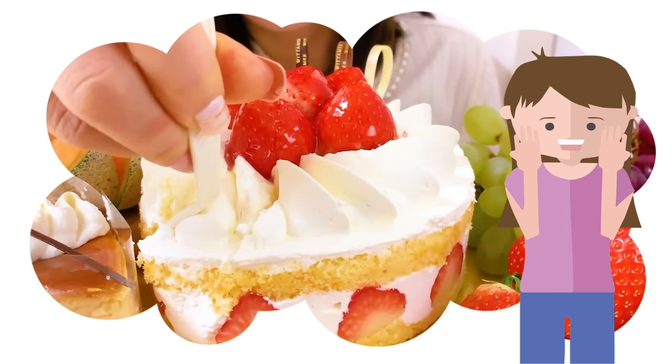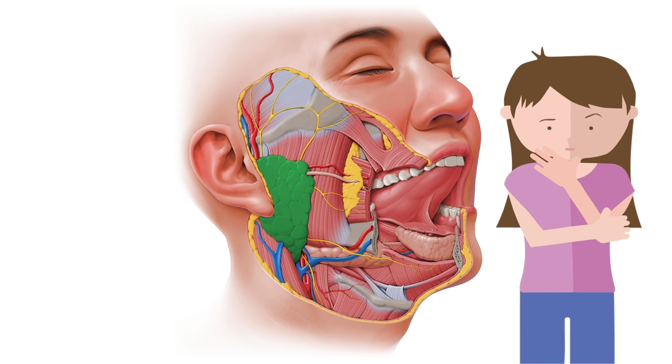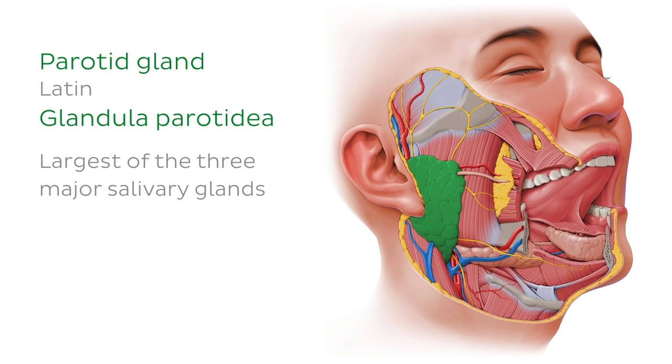But how much do you know about the glands that produce your saliva? Stick around to find out more about one of them in our short tutorial on the parotid gland. The parotid gland is the largest of the three major salivary glands, and you have two of them, one on each side of your face.